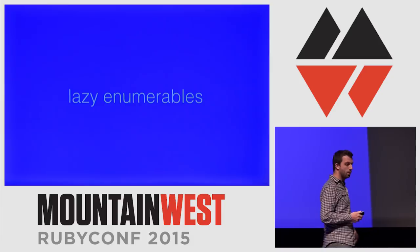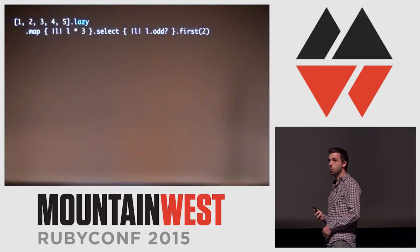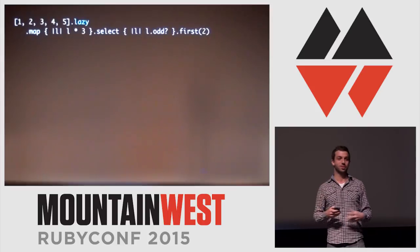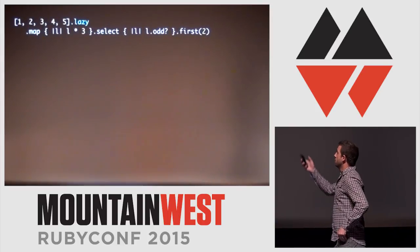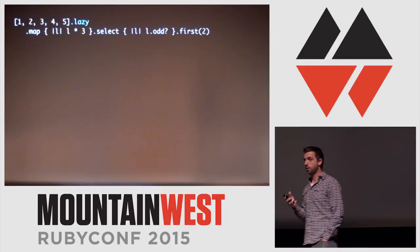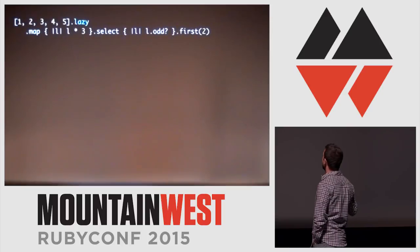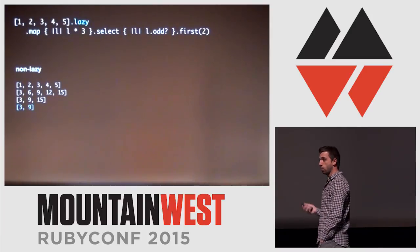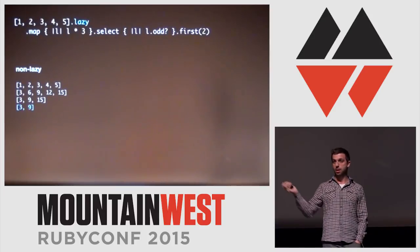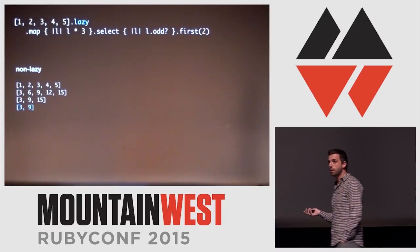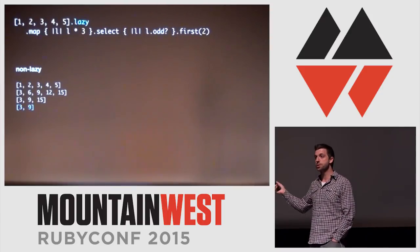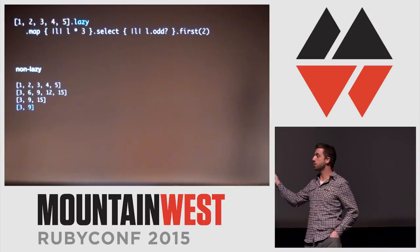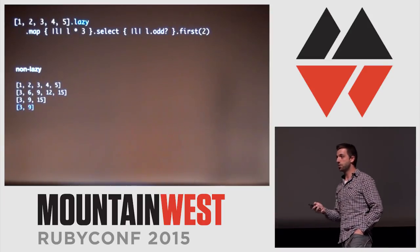Now let's talk about tips and techniques. First, lazy enumerables. This is a typical operation — if you ignore the dot-lazy piece, it looks like code you'd normally write, chaining array or enumerable operations and then limiting the result at the end. The non-lazy form starts with an array like 1, 2, 3, 4, 5, multiplies them all by three, selects only the odd ones to get 3, 9, and 15, then takes only the first two. Notice that 4 and 5 didn't make it into the result, so we didn't actually need to compute them through the entire chain.